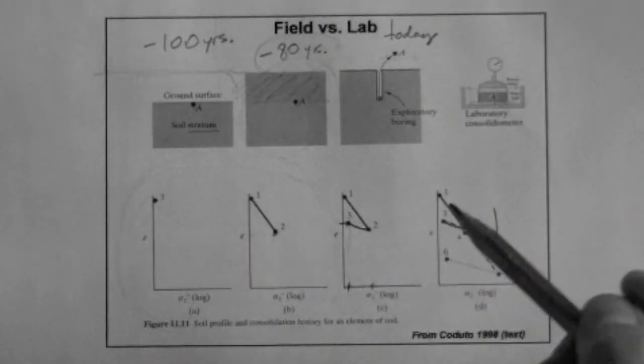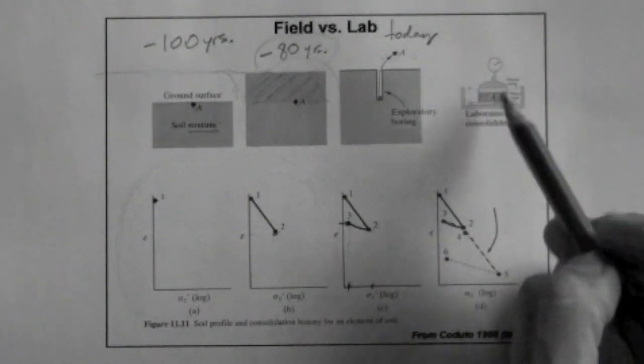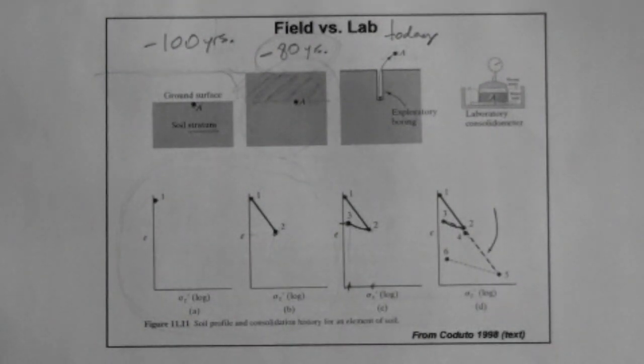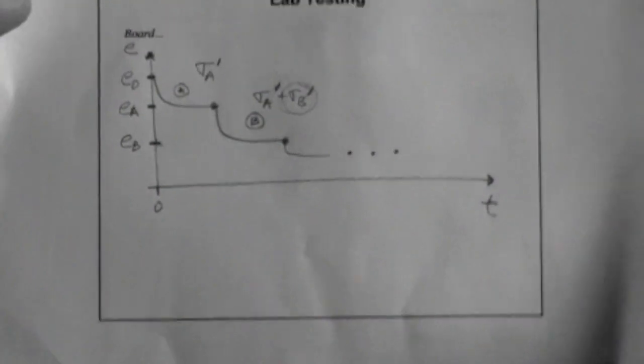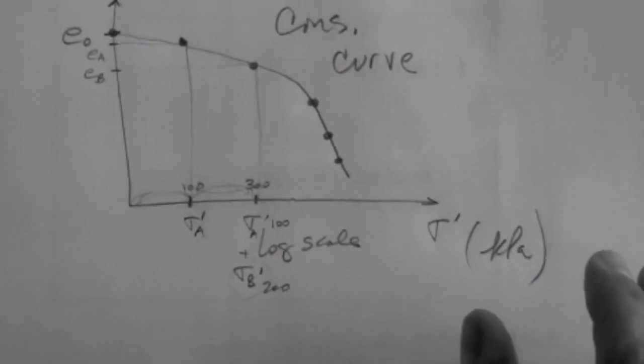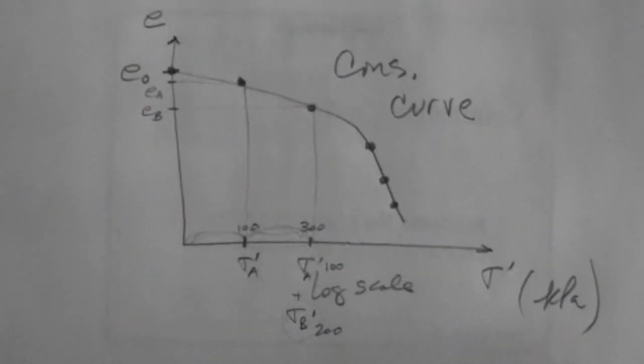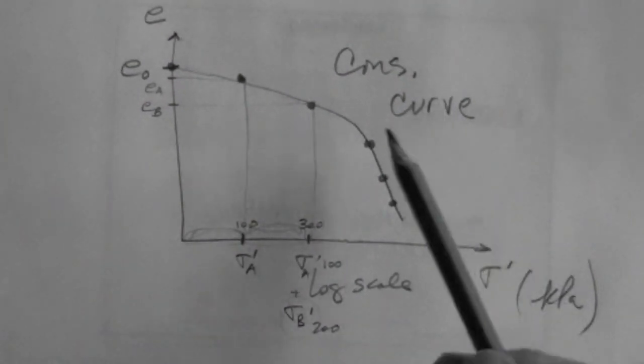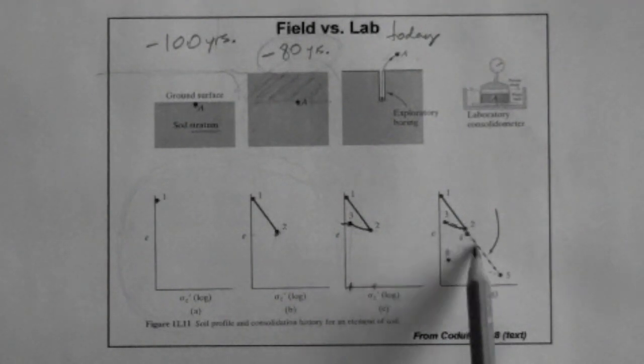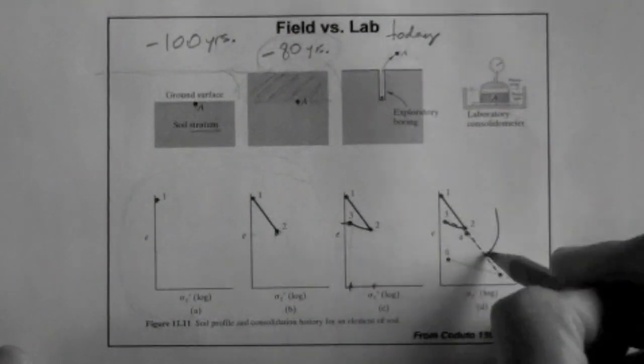And then once we place it in the specimen holder here in the setup, in the consolidometer, then we load it with our procedures like that. We get the data, we reduce the data so that the plot that is of relevance to us is this one, the consolidation curve, and we get this curve for the soil. Which is noted here in red. It's in dashed line here.